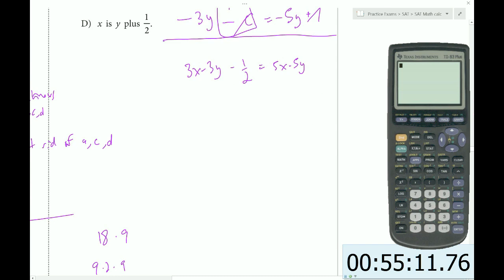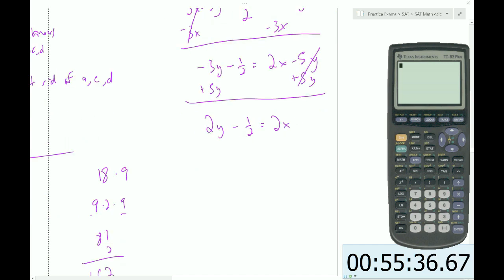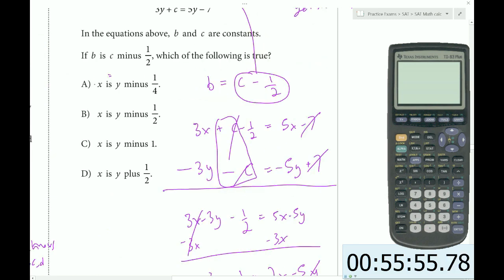So I get 3x minus 3y, the c's cancel out, minus 1 half equals 5x minus 5y. Now I just have to rearrange and solve for x. Subtract 3x, add 5y, I get 2y minus 1 half equals 2x. Divide by 2 to get y minus 1 fourth equals x. So x is y minus 1 fourth. That is answer choice A.